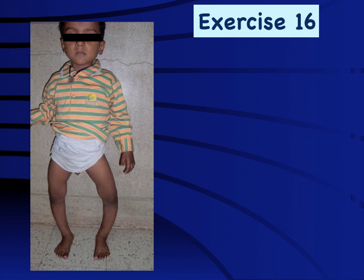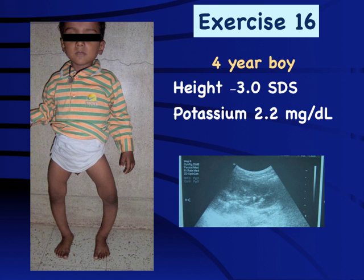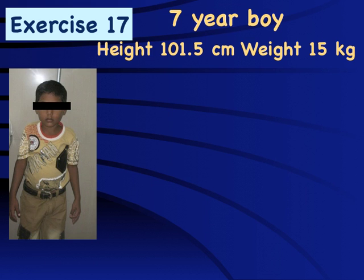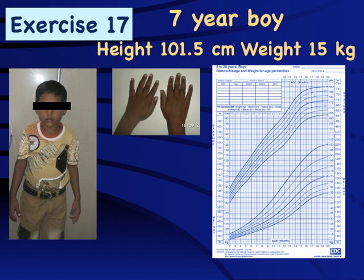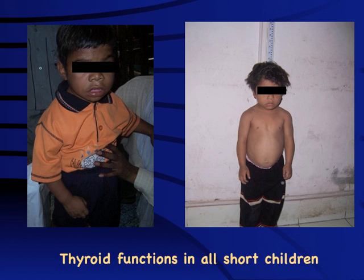A child presenting with rickets and short stature raises important considerations including renal failure, malnutrition, celiac disease, and renal tubular acidosis. In one case, hypokalemia and nephrocalcinosis on ultrasound indicated distal renal tubular acidosis. A seven-year-old boy with height 101 cm, weight 15 kg, clubbing, and growth failure fitting a nutritional pattern most likely had celiac disease — confirmed by positive TTG antibodies. Hypothyroidism may present without any clinical features, so thyroid functions including both free T4 and TSH should be done in all short children to avoid missing central hypothyroidism.